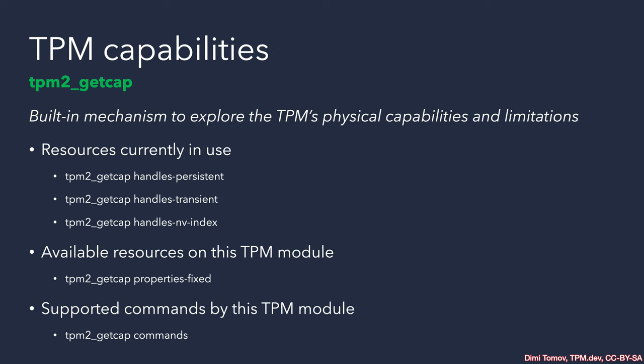Now we come to TPM2 capabilities. On the previous slide, there was a command that helps you find out what persistent handles are currently in use on a TPM. That's valuable, especially if there are older users or older processes using the TPM. This is why it's important to have different hierarchies, authorizations, and so on.